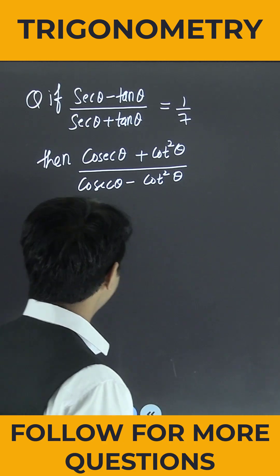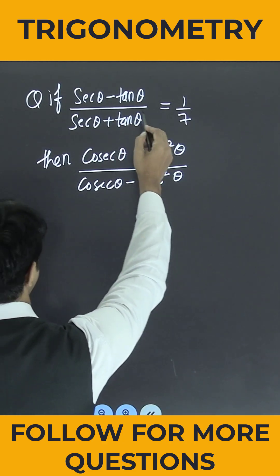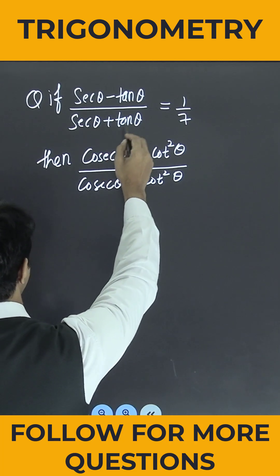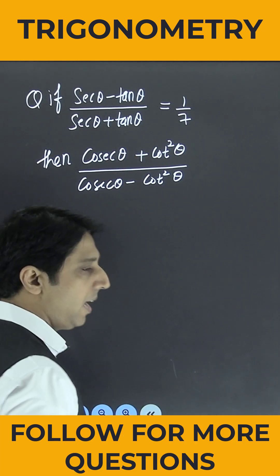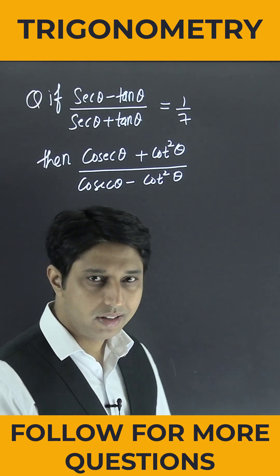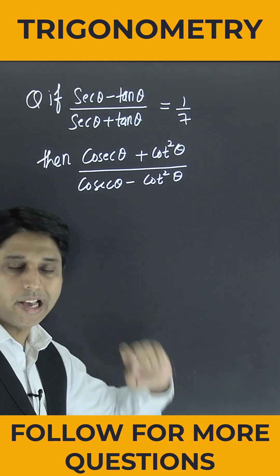One question is given to us: if sec θ minus tan θ divided by sec θ plus tan θ is equal to 1/7, and θ lies in the first quadrant, then we have to find out the value of this expression.